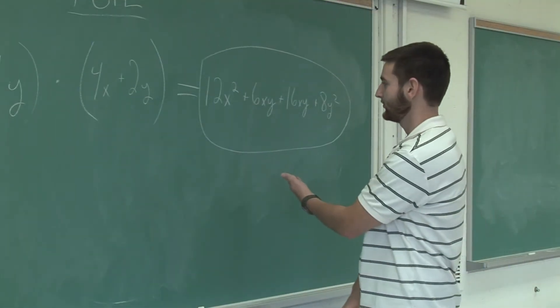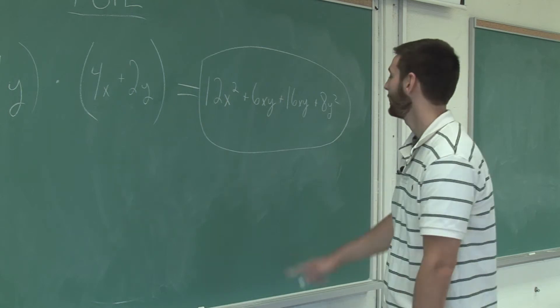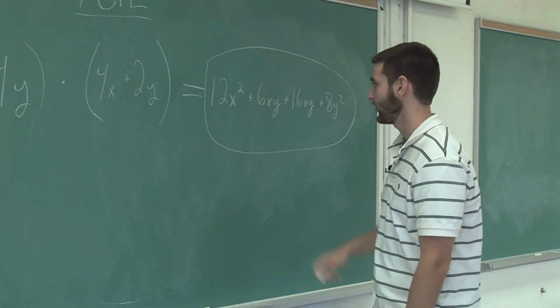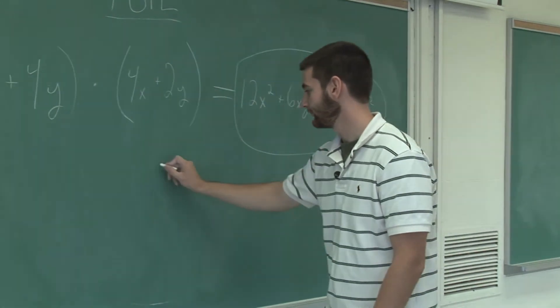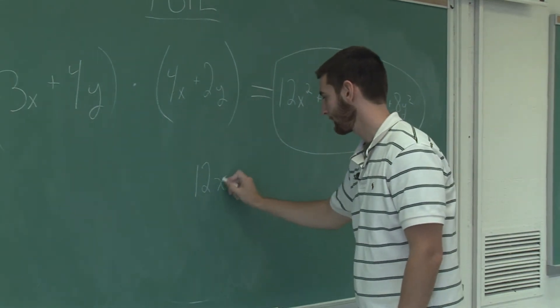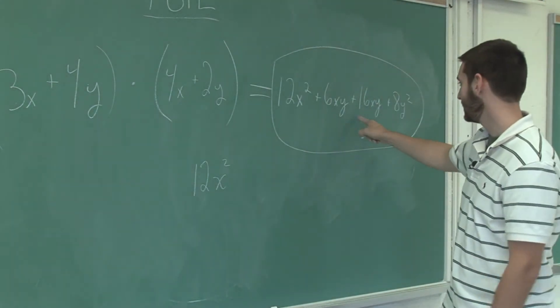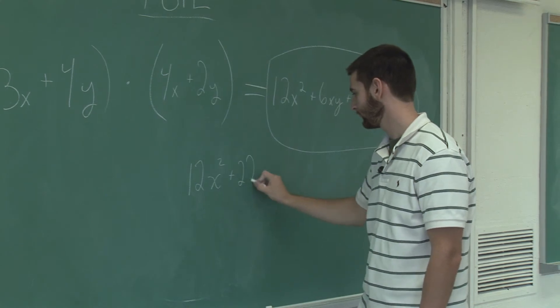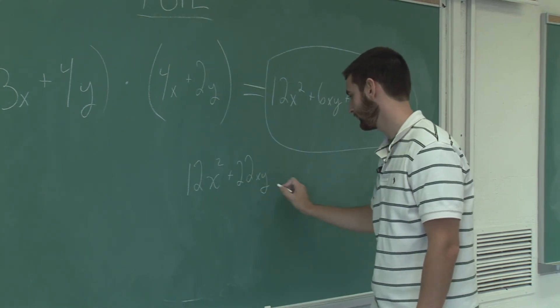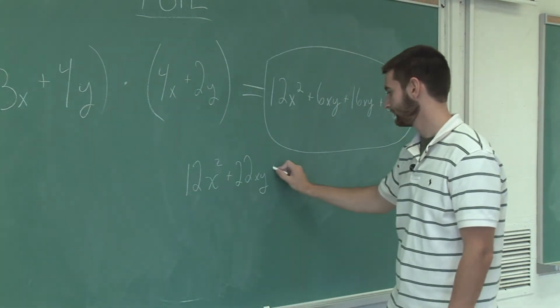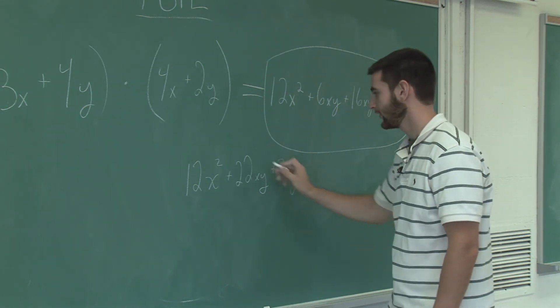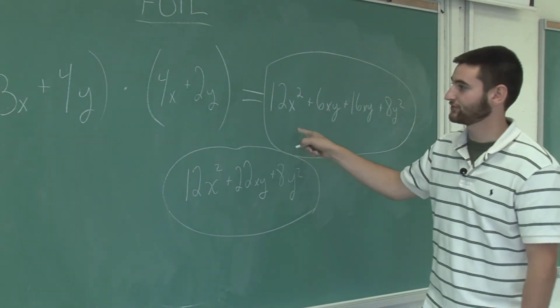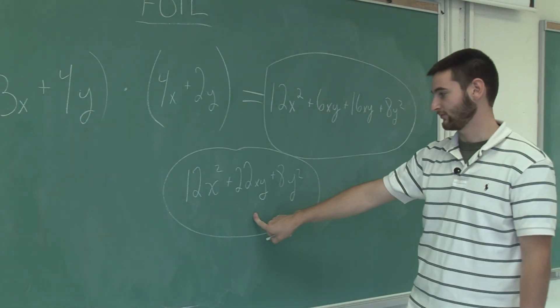This polynomial can be simplified. We can put it into alphabetical order, and we can also combine these two terms, which are the same function of x and y. So let's take our x squared first. 12x² plus 22xy plus 8y squared. This is the same polynomial that we got as a result of this multiplication, but this is in simpler form.